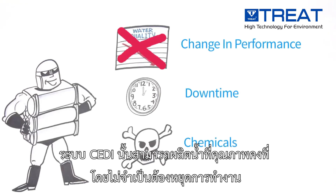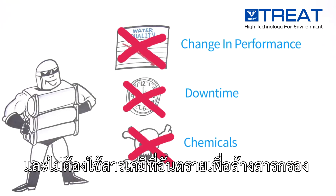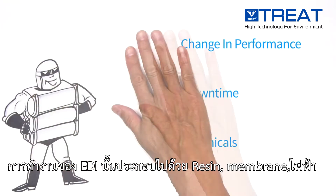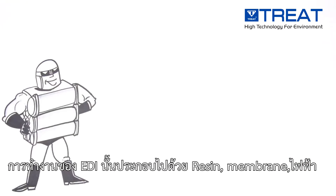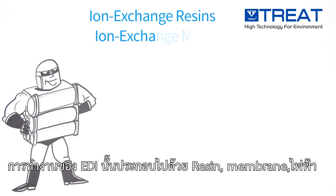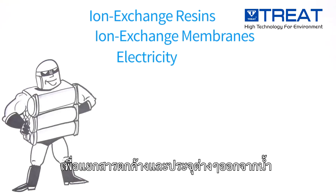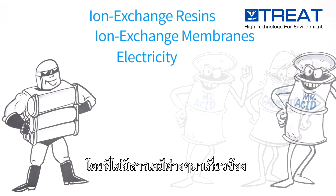IonPure CEDI provides a continuous flow of high purity water with essentially no downtime or hazardous acid and caustic chemicals. IonPure CEDI modules use ion exchange resins, ion exchange membranes, and electricity to separate impurities from water and deionize it — but they don't use those nasty chemicals.